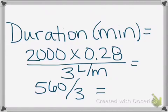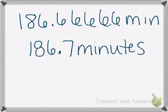To put it in your equation, duration in minutes equals the PSIG, which is 2,000, times the tank duration factor for an E cylinder, 0.28. Divide all of that by 3 liters per minute. You should then get 560 divided by 3, which equals 186.66666 minutes.